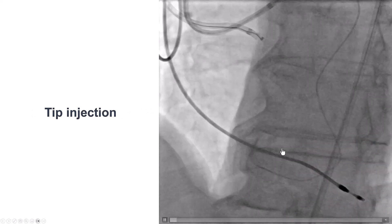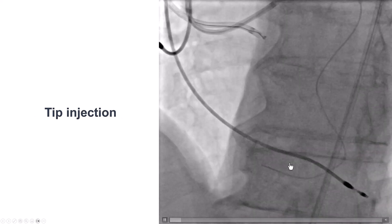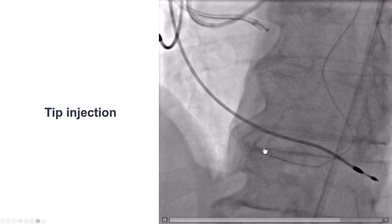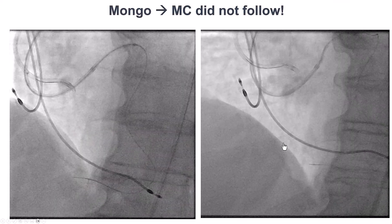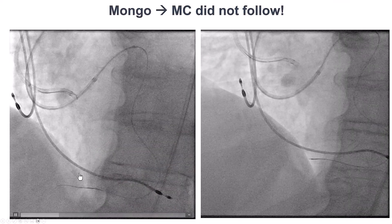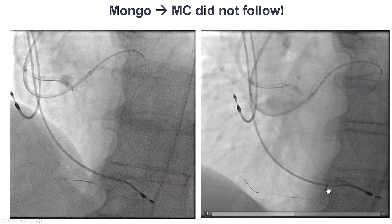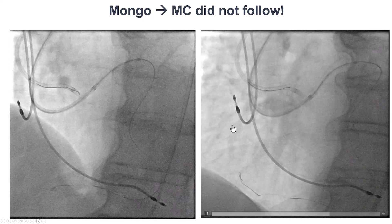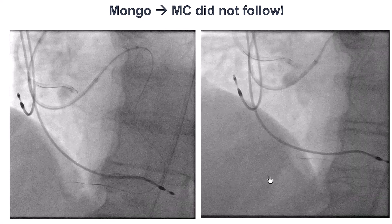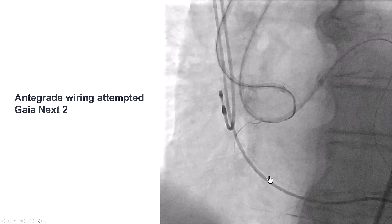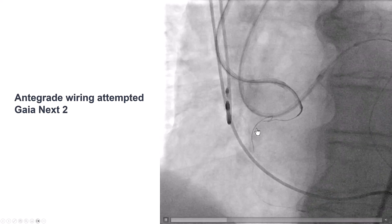We then did a tip injection, which confirmed that we had a blunt distal cap at the bifurcation of the PDA and the right posterior lateral. We used a Gladius Mongo guide wire, were able to penetrate a little bit into the occlusion, and then knuckled the wire — which was beneficial given the long occlusion length. We had difficulty advancing the microcatheter through that area, but were able to get the wire quite close to the proximal cap.